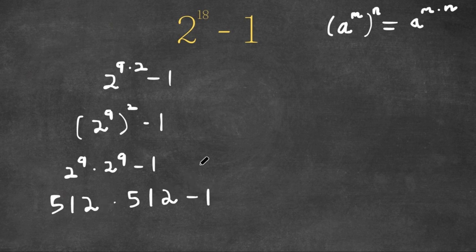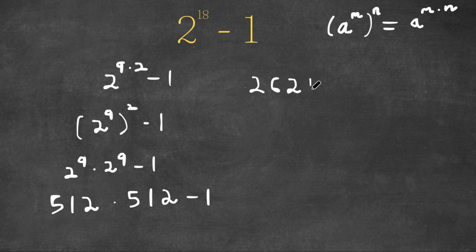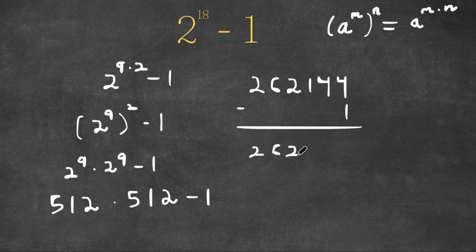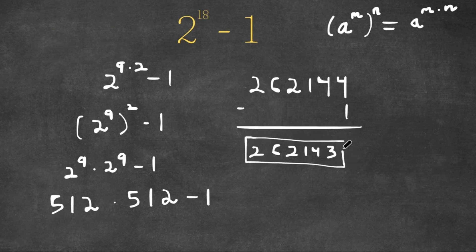Now 512 times 512 is equal to 262,144. And now our minus 1 — we simply subtract 1. So this would be 262,143. So this is our answer.